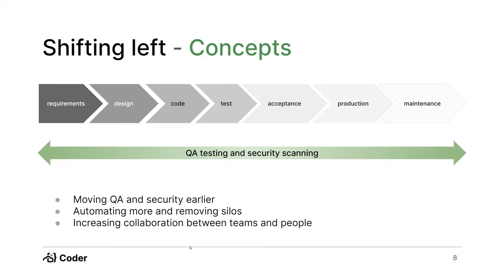Across the top, I have a very typical SDLC diagram with the different stages of the software development lifecycle. At the beginning, we do some type of project planning — maybe a stakeholder meeting to determine business requirements. There's a design phase where architects lay out the high-level infrastructure and database needs. Then we have coding, test phases for unit, integration, and end-to-end testing, acceptance testing to ensure the code meets requirements, a promotion phase where we ship to production, and then a maintenance period to track bugs and ensure things are operational.